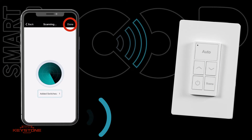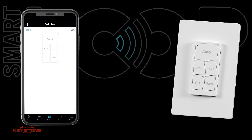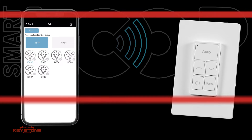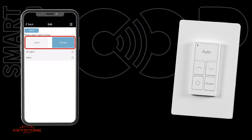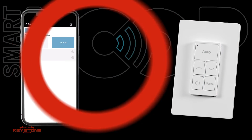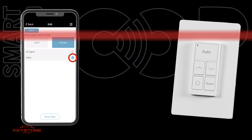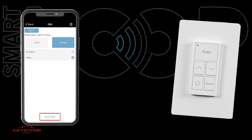Press Done to return to the Switches page. Press the gear icon to open settings for the keypad, select the light or group to be controlled by the new keypad, then press Next Step.